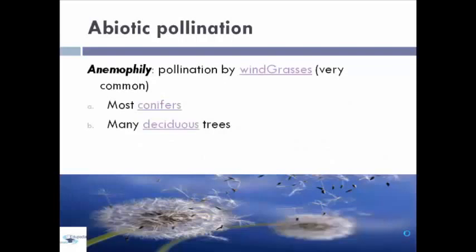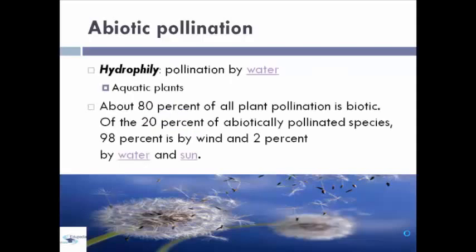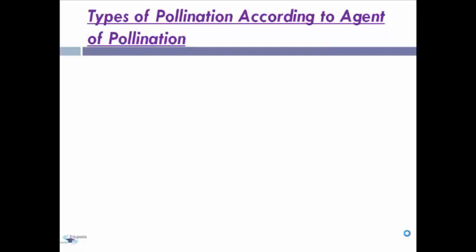Next, we have abiotic pollination. After biotic pollination, we have hydrophily, which is pollination by water, such as aquatic plants. About 80% of plant pollination is biotic. Of the 20% of abiotically pollinated species, 98% is by wind and 2% by water.